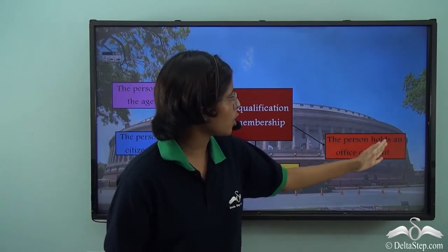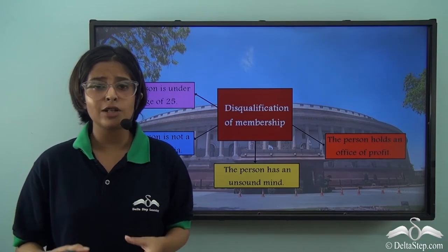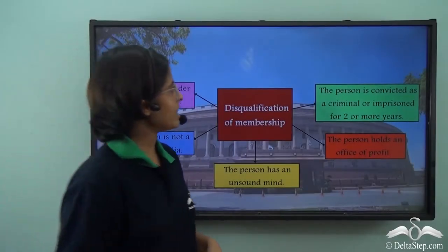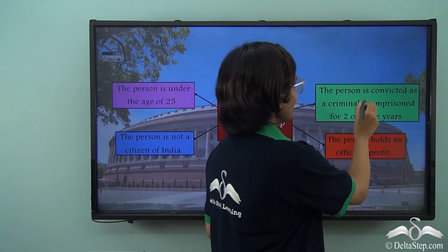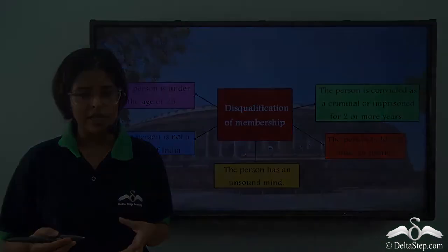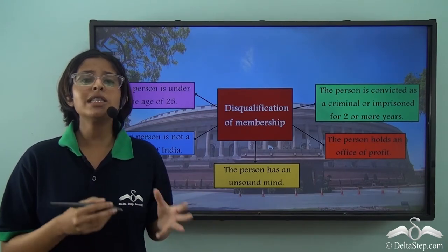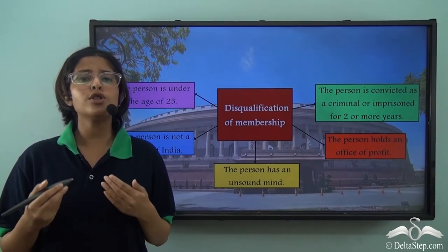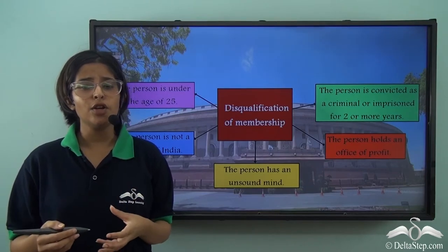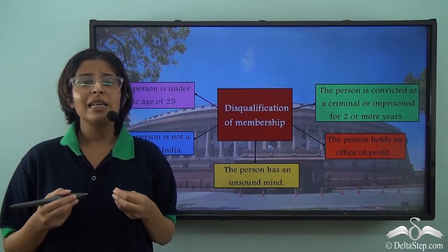The fourth disqualification is holding an office of profit, as we learnt through the Sonia Gandhi example. The fifth point is that the person is convicted as a criminal or imprisoned for two years or more. In India many cases get pending for years, but if a Lok Sabha member's pending criminal case is later proved and they are given imprisonment for more than two years, they will be disqualified. Lalu Prasad Yadav from the Rashtriya Janata Dal was disqualified after being convicted and given imprisonment for five years.